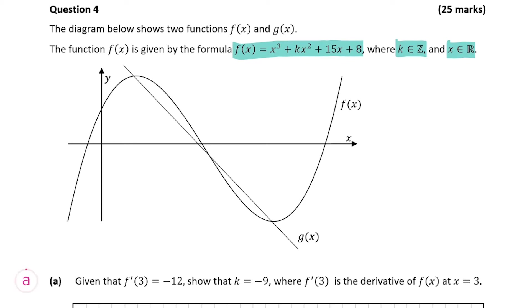Let's read part A. Part A says: given that f'(3) = -12, show that k = -9, where f'(3) is the derivative of f(x) at x = 3. I love these types of questions because you know when you're wrong — if we don't get minus 9 we know we've gone wrong. It also means that even if we don't get this part out, we still have the answers we can use later on.